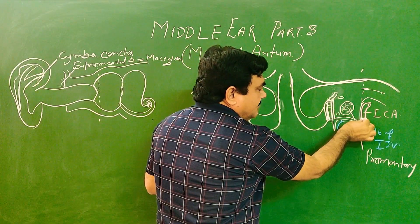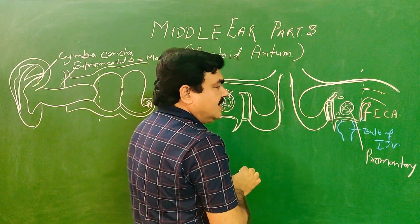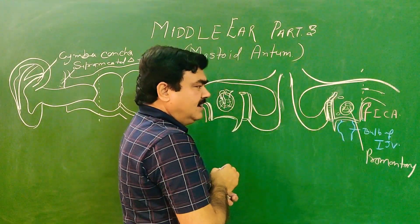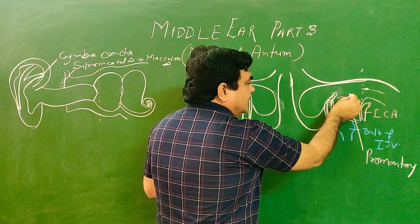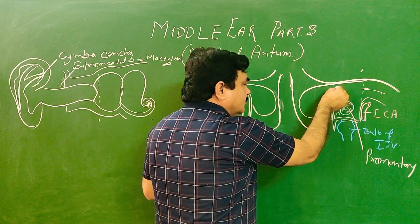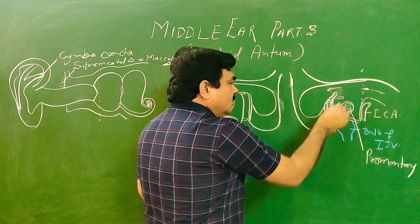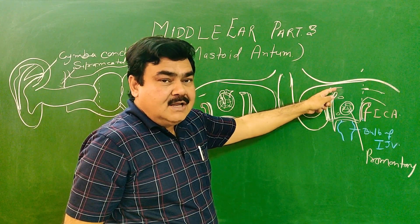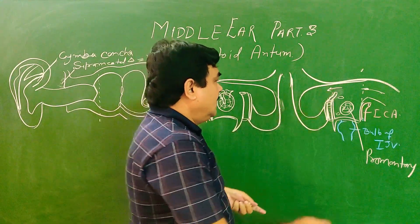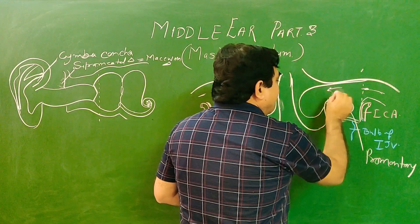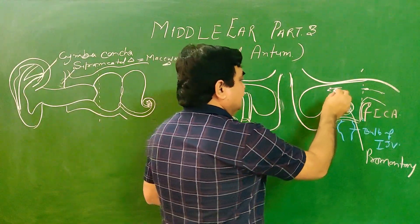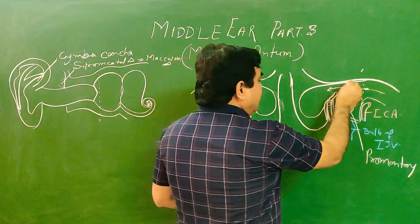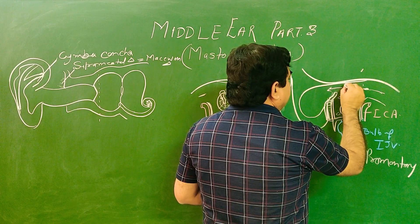This is the posterior wall of the middle ear, this is the roof, and this is the floor of the middle ear. The opening present in the upper part of the middle ear is known as the epitympanum.